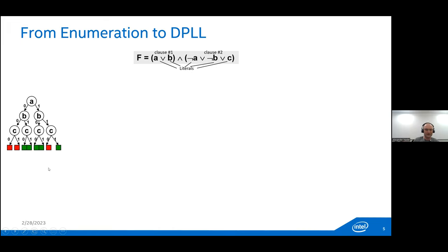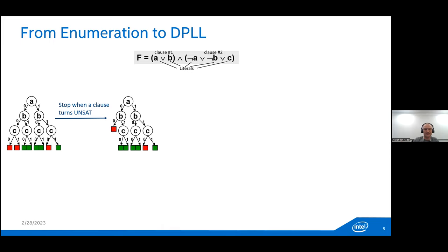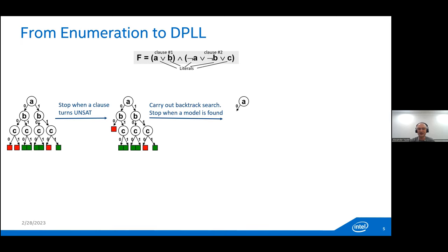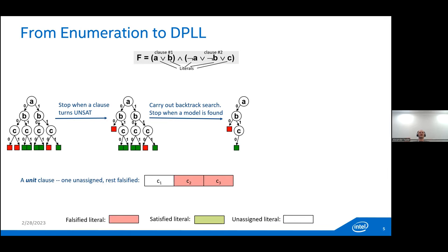Full enumeration is not efficient because the tree is exponential. Two improvements were already in the original DPLL: first, stop early when a clause becomes unsatisfied; second, use backtrack search and stop when a model is found. You pick a variable, choose a value, detect a conflict when a clause is falsified, backtrack and flip the value, then find a satisfying assignment.